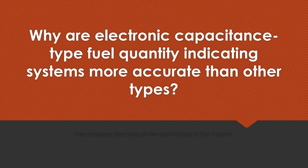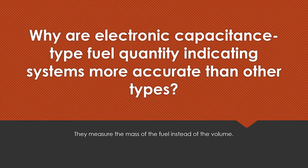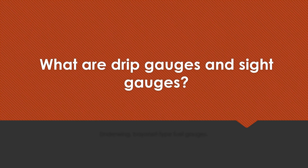Why are electric capacitance type fuel quantity indicating systems more accurate than other types? They measure the mass of the fuel instead of the volume. What are drip gauges and site gauges? Underwing bayonet type fuel gauges.